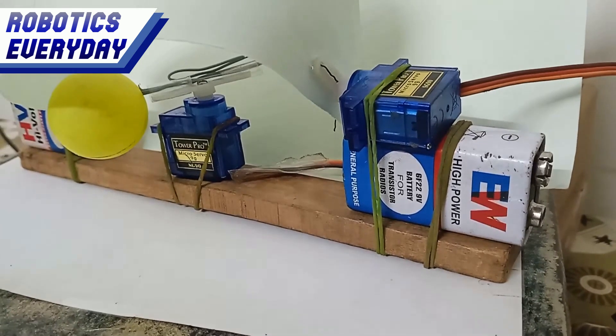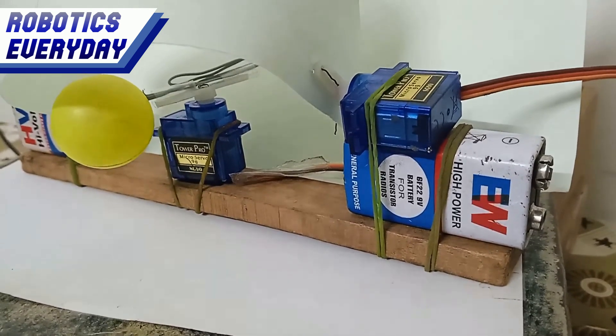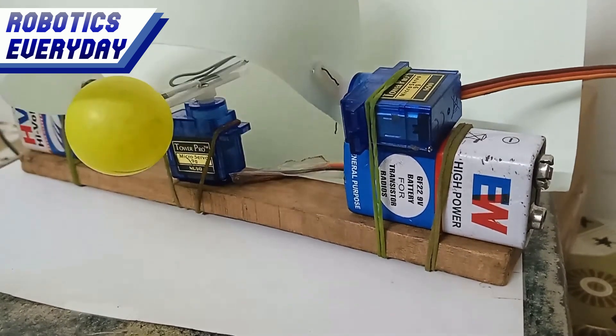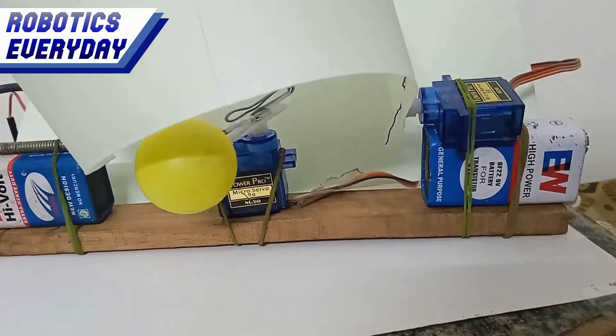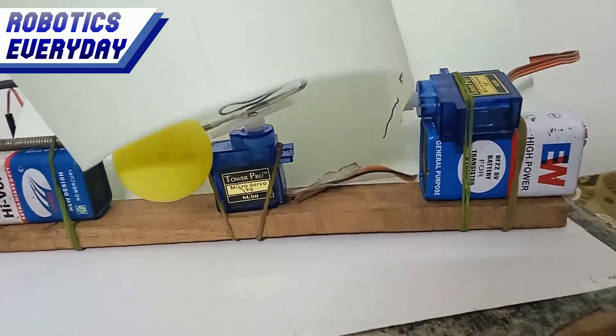The top eyelid in this robotic eye setup is attached to a servo motor. This servo motor is capable of opening and shutting the top eyelid. By controlling the movement of the servo motor, the robotic eye can simulate the natural motion of an eyelid opening and closing.